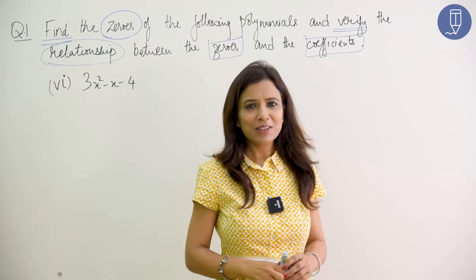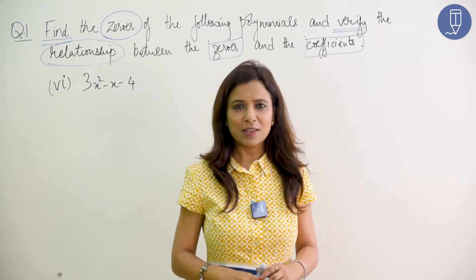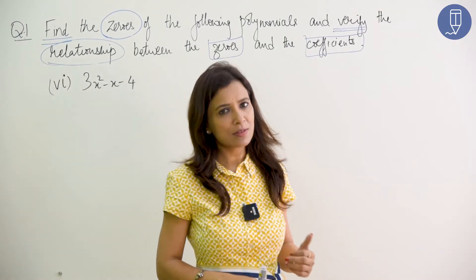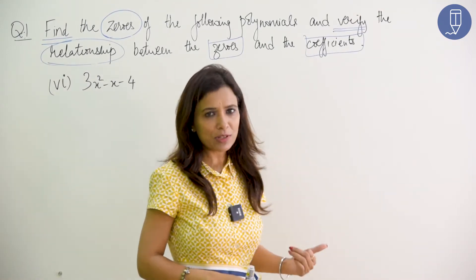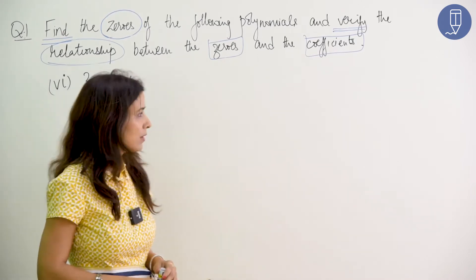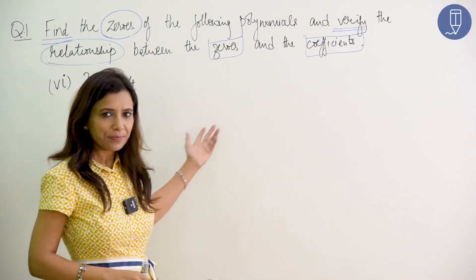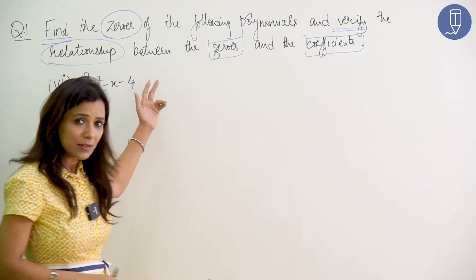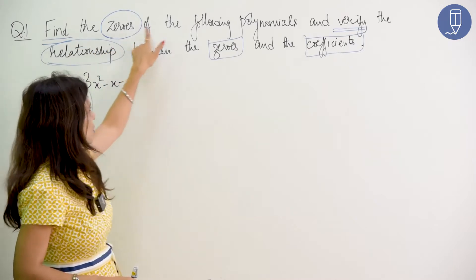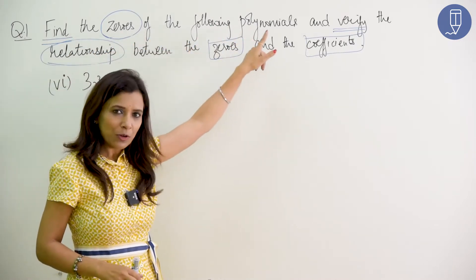Hello, today we will do exercise 2.2, question number 1, sixth part, which is the last part of question number 1. Let's read the question: Find the zeros of the following polynomial.